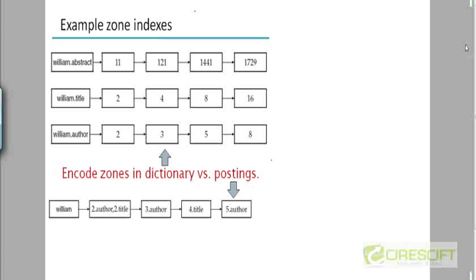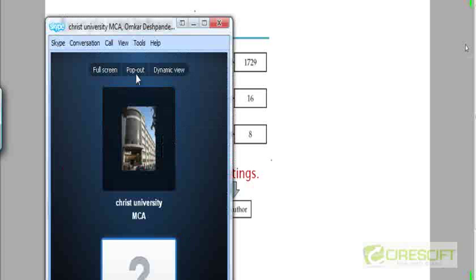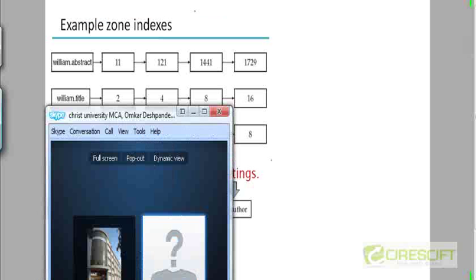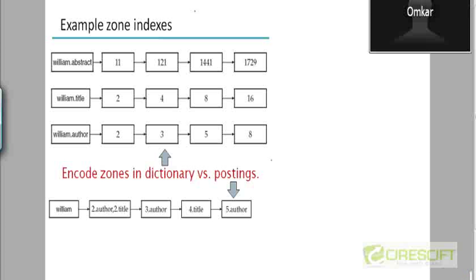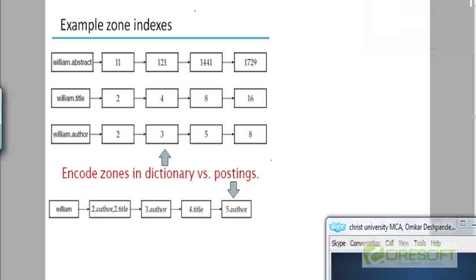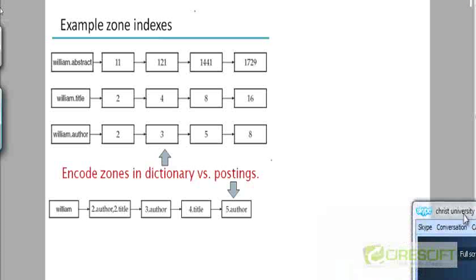Looking at the slide titled 'Example Zone Indexes,' there are two different ways shown on how to implement a zone index. In the top part of the figure, you can see three postings lists for three terms: William.Abstract, William.Title, and William.Author. Abstract, Title, and Author are the zones of the document.